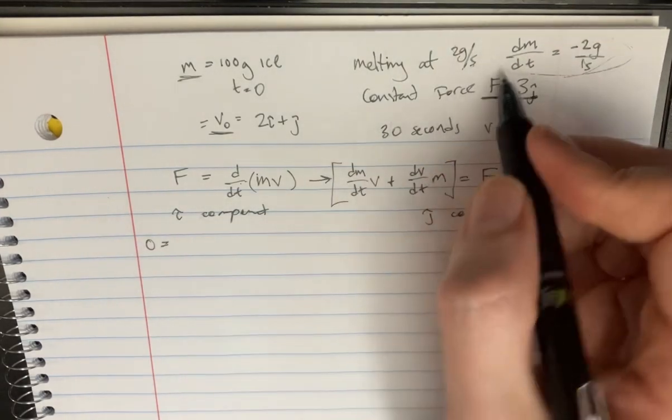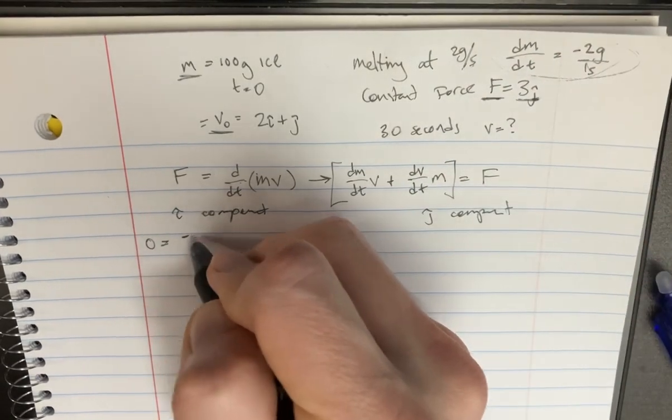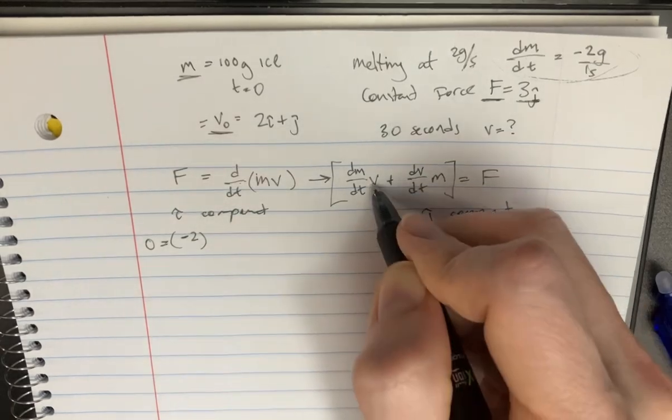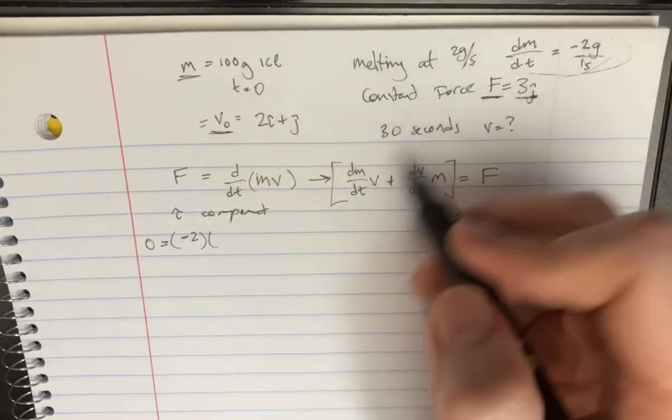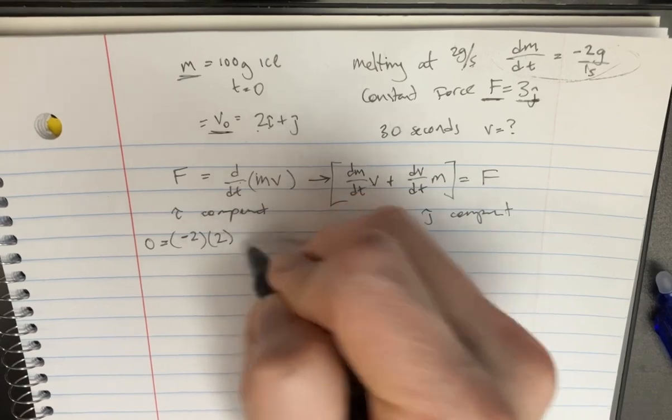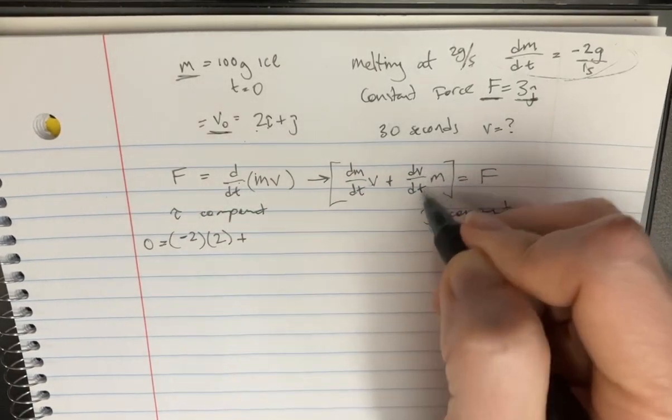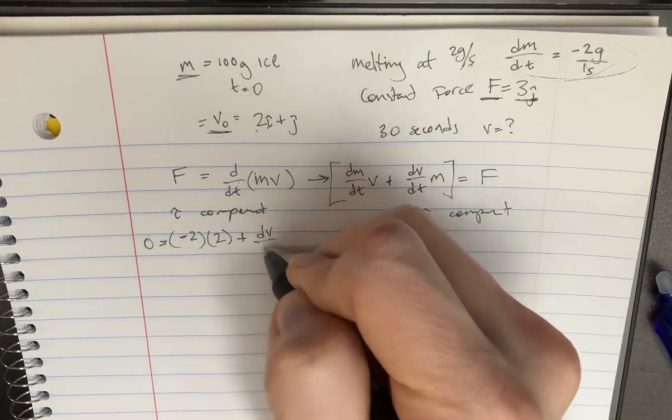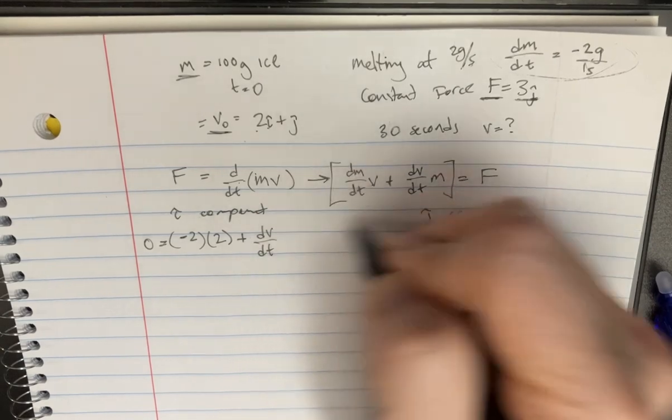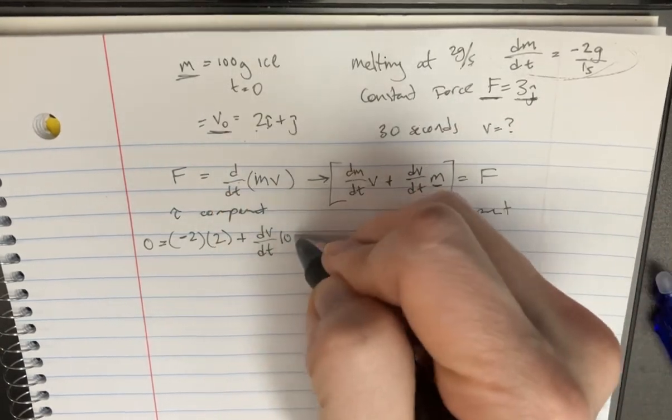But for i, we have dm over dt is, again, going to be negative 2. And then we have v. That's the initial v. And the i direction is going to be 2. And then we have plus dv over dt. We don't know that. So we're going to put that there. And the mass is 100.